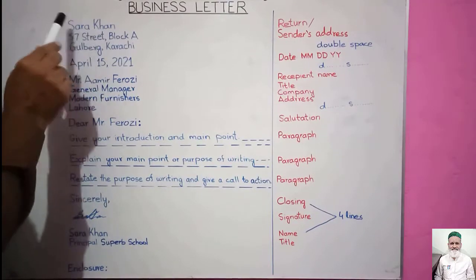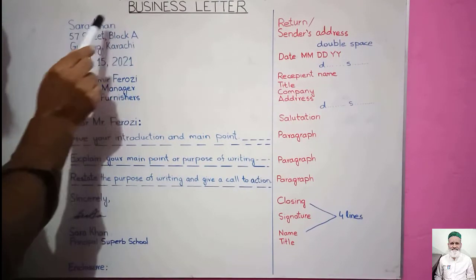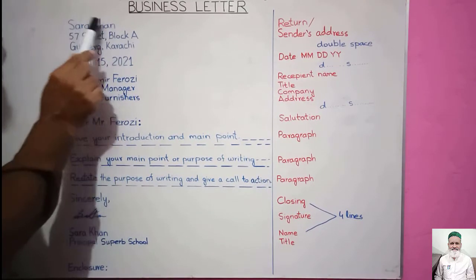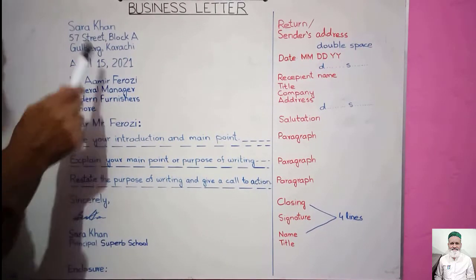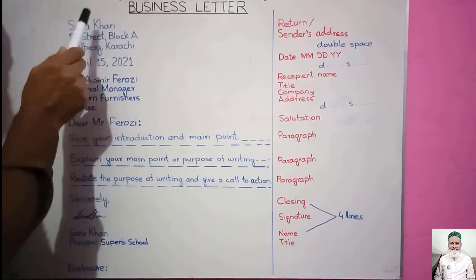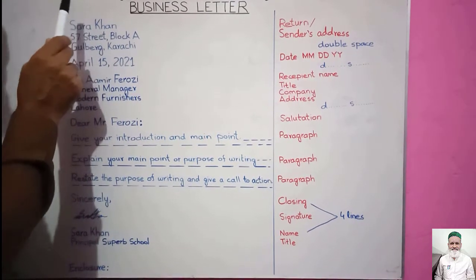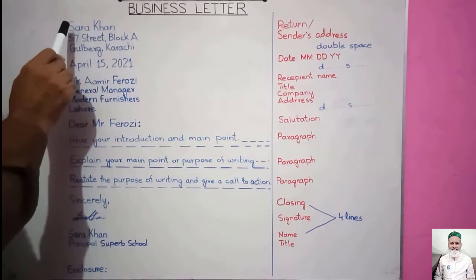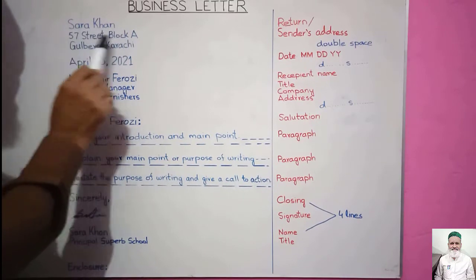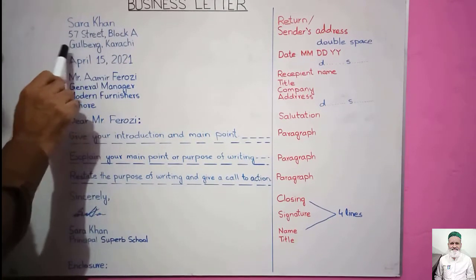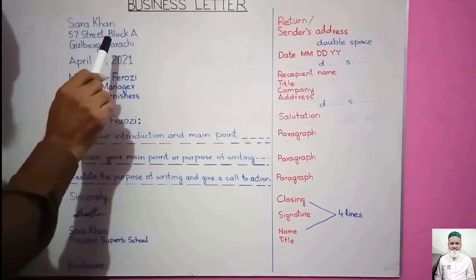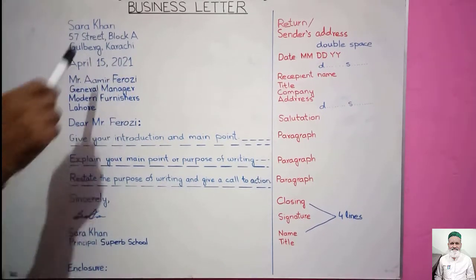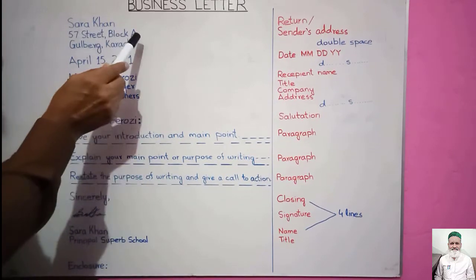In the Sender's address, I have written the sender's name at the top, followed by the complete address. Writing the name in the Sender's address is not mandatory — some people include it and some don't, because the sender's name already appears in the closing section. Along with the Sender's address, the sender can also provide their contact information, such as a mobile number, email, or WhatsApp number.